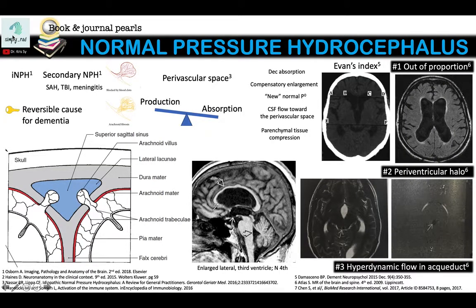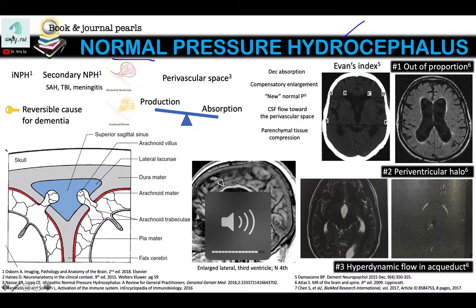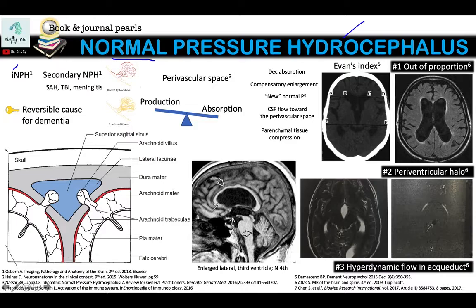Normal pressure hydrocephalus — getting clues from its name, we get big ventricles, but CSF pressure is normal. It can be idiopathic, where we're not sure what the reason is, or secondary if we know what's causing it. Secondary causes include subarachnoid hemorrhage, traumatic brain injury, or meningitis. In these cases, there can be fibrosis of the arachnoid granulations, which is the point of CSF absorption.